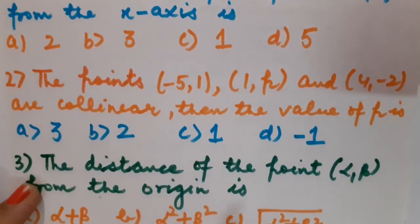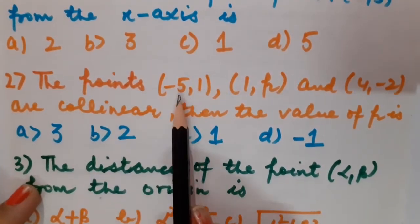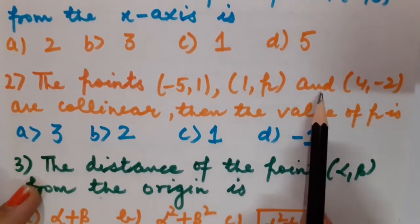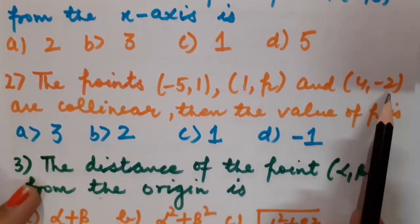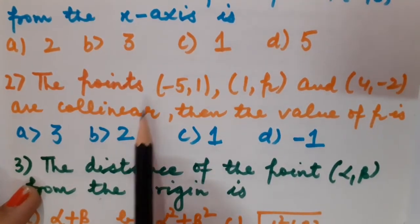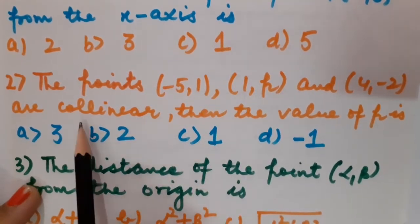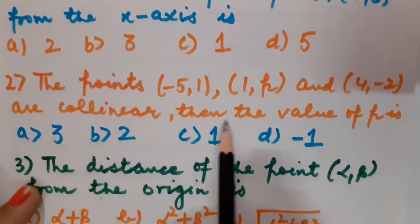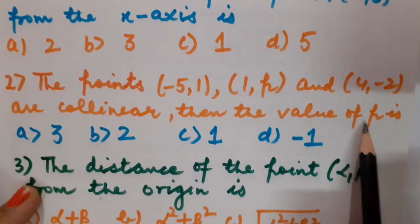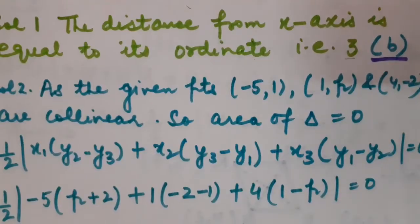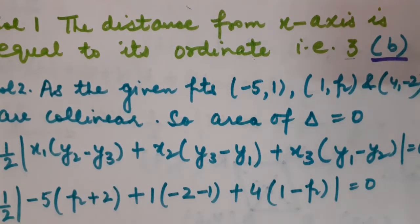Our next question: the points (-5,1), (1,P) and (4,-2) are collinear. It is given that the points are collinear, meaning they lie on the same line. We have to find the value of P. As you know, if the points are collinear, then the area of the triangle must be 0. That same concept I have applied here.